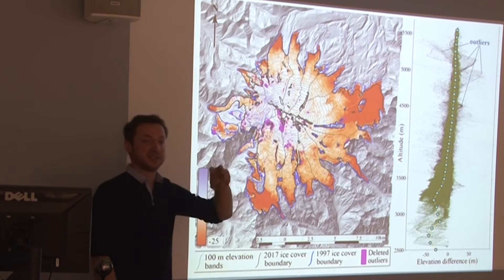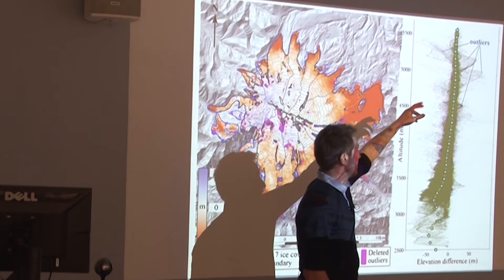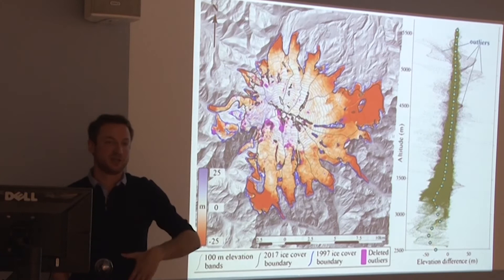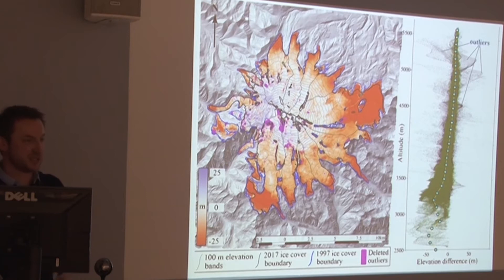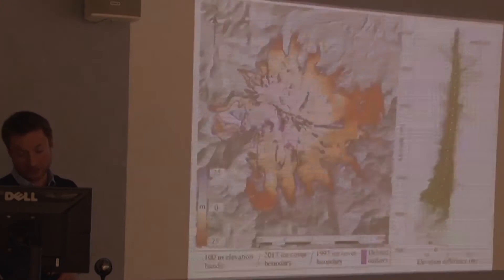With the 10-meter resolution models, we had 1.7 million points for statistical analysis. There are those outliers — which we eliminated — from very steep slopes where even high-resolution DEMs give large errors. We deleted these outliers and calculated statistics for 100-meter elevation bands.